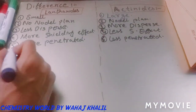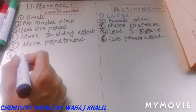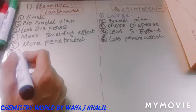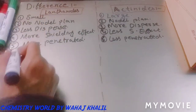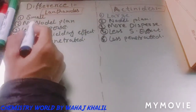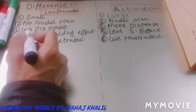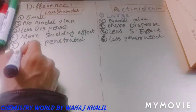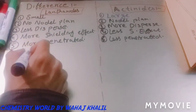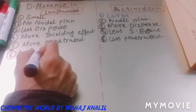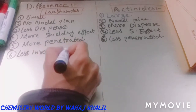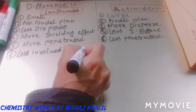Sixth difference: lanthanides are less involved in bonding because their size is small, they have no nodal planes, are less dispersed, and have a higher shielding effect. Actinides are more involved in bonding.